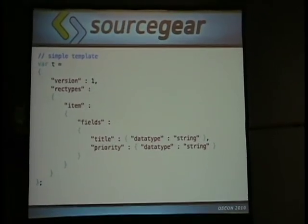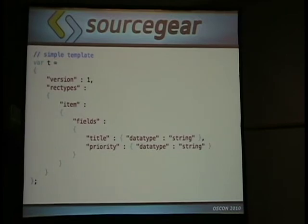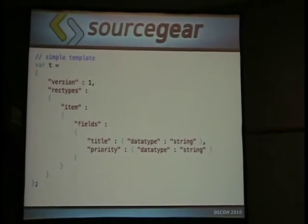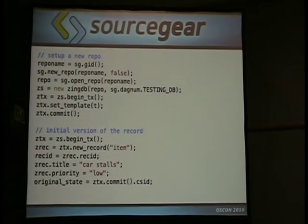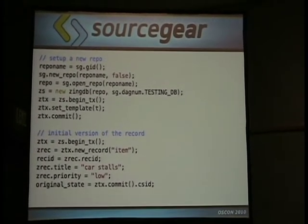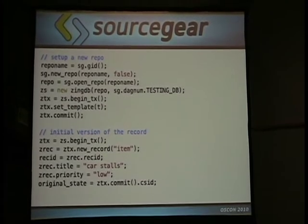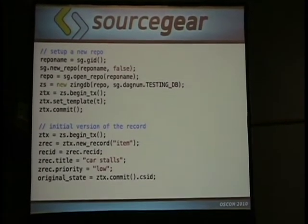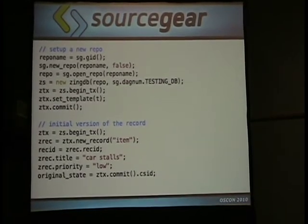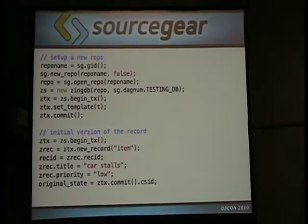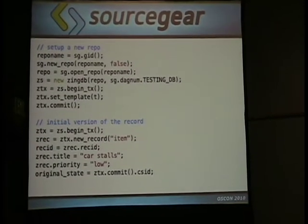Here's a simple template example. We've defined two fields — think of it as a bug database that has only title and priority. There's some JavaScript code to create that database. I won't explain it all, but at the bottom we add a record: a bug whose title is 'Car Stalls' and priority is 'Low.' That's the initial version of the bug, logged before they had all the information.